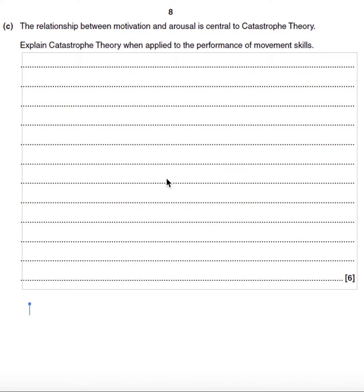Let's have a go at this cheeky little question about catastrophe theory. Remember the golden rule: we want to try and include a mark from the mark scheme — which I'll identify in red — in the first line or first sentence of what we write.